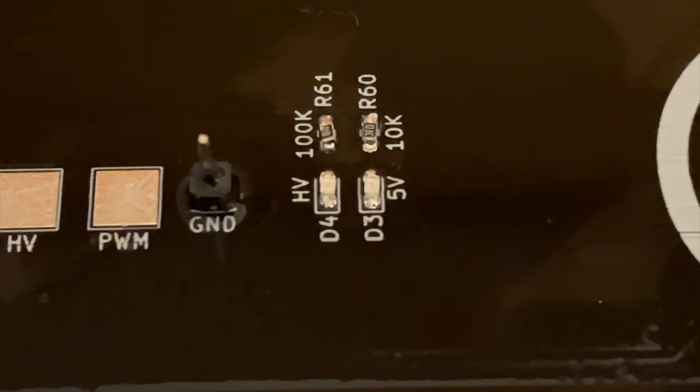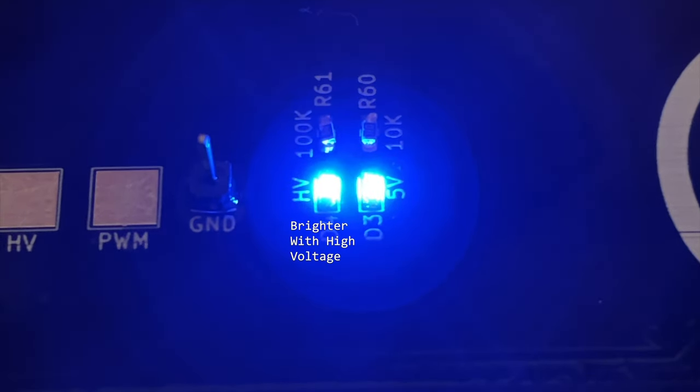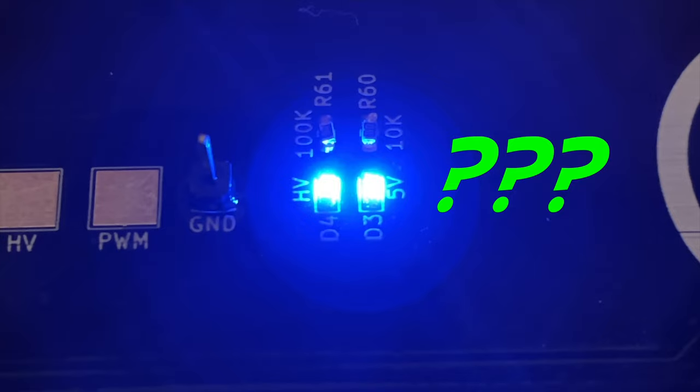I'm also not too happy with these two indicator LEDs. The 5 volt indicator is fine, it tells us if the board is receiving power or not. The high voltage indicator is less useful. Even when we don't have the high voltage being generated there's still 5 volts coming through the inductor so the LED lights up anyway making it pretty useless. To be honest I'm not entirely sure how to indicate the high voltage power supply is working. Any suggestions in the comments would be welcome.